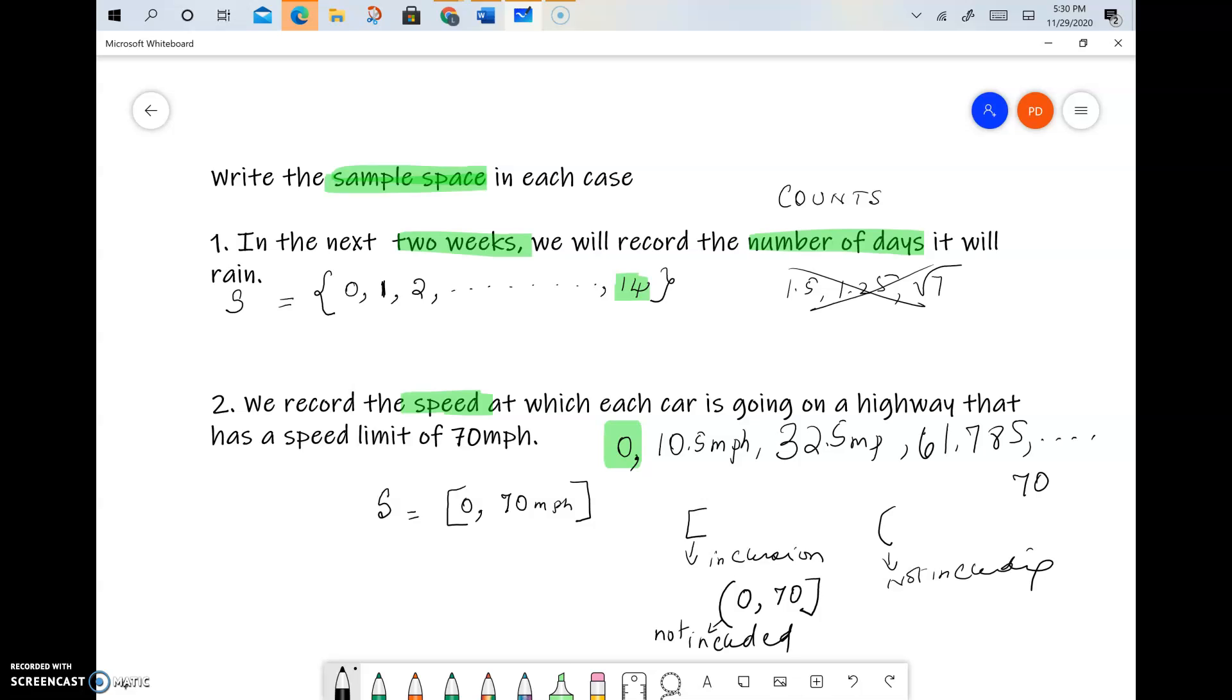So this is how the sample space can be described as a range of values, and these are called intervals. They are not a list of numbers, but they are a range of values with a lower limit and an upper limit.